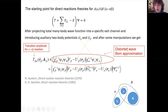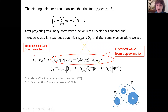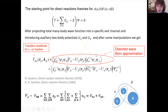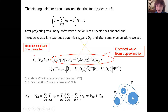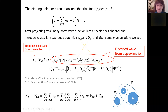Only the first term is retained, and it is called the distorted wave Born approximation (DWBA), which is widely used to analyze various direct reaction experiments and DP reactions in particular. The transition operator in this DWBA contains the difference between the interactions between nucleons in the nuclei in the final channel minus the auxiliary potentials.